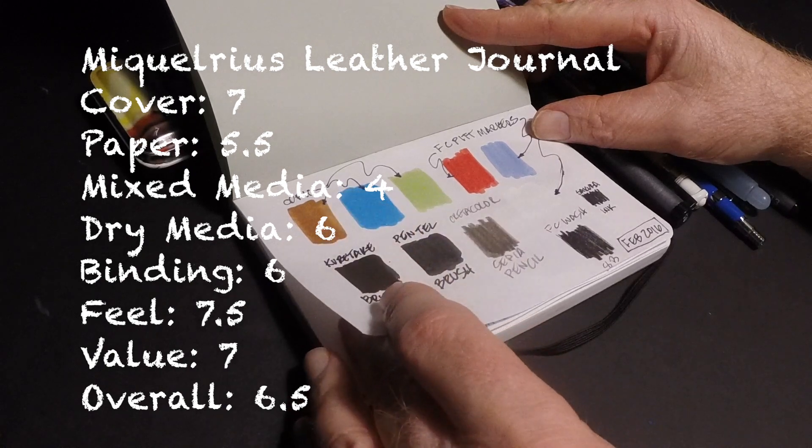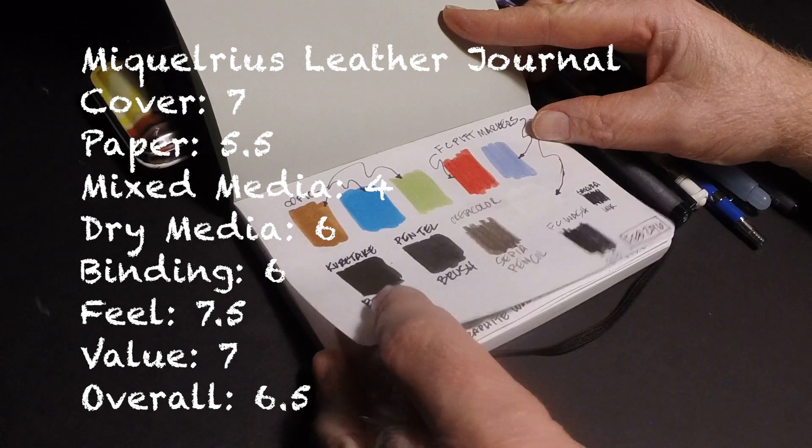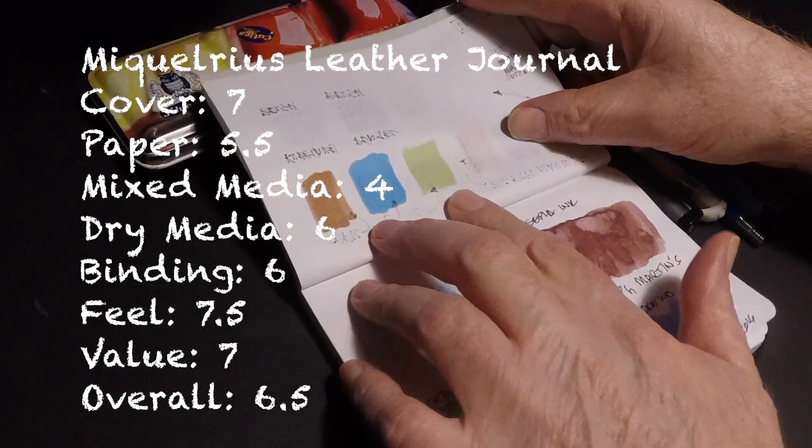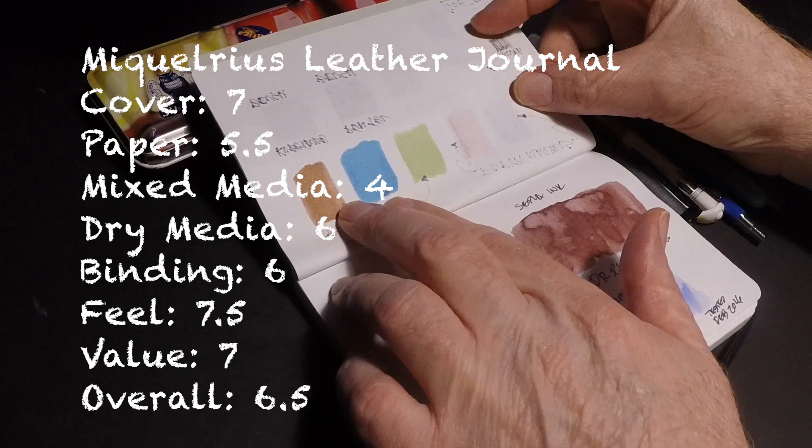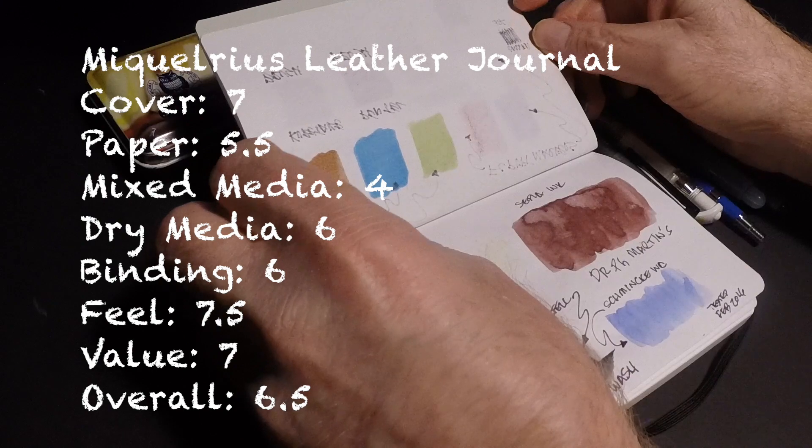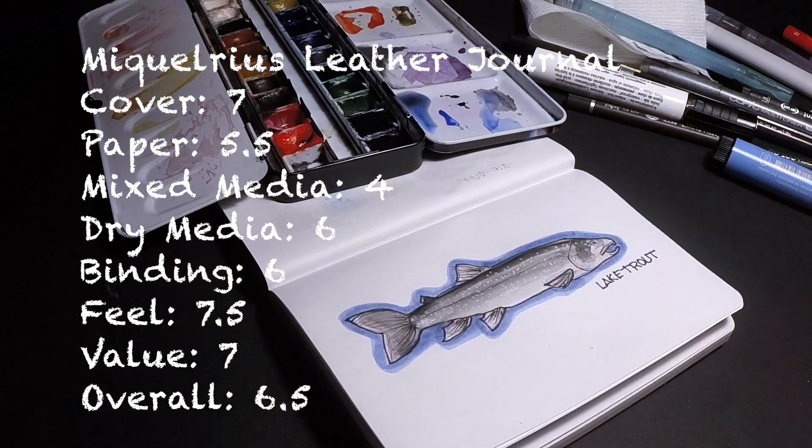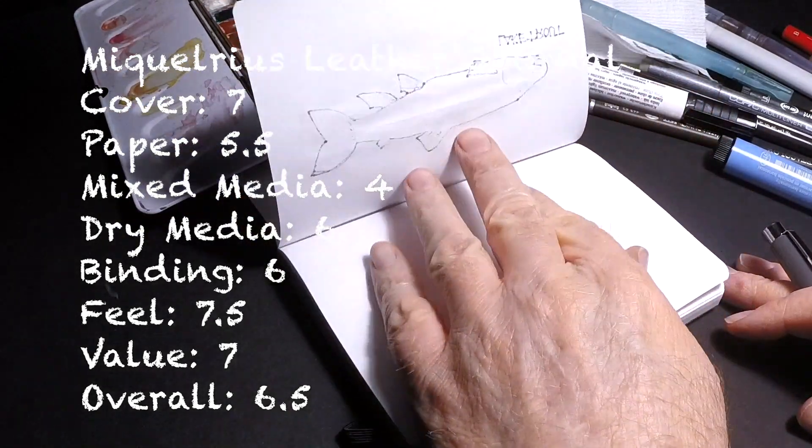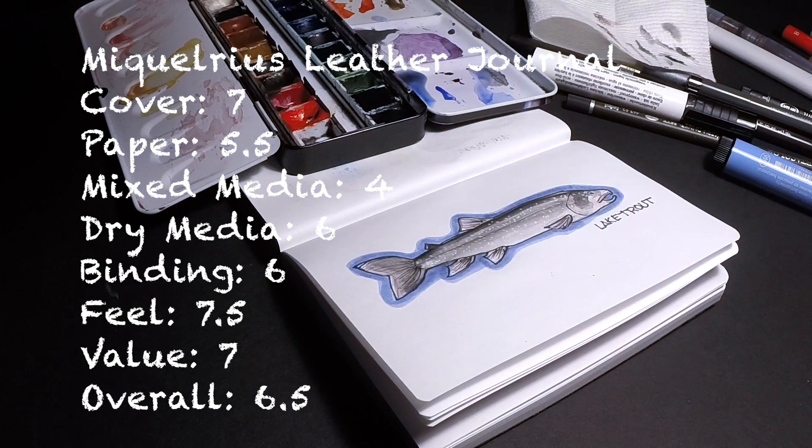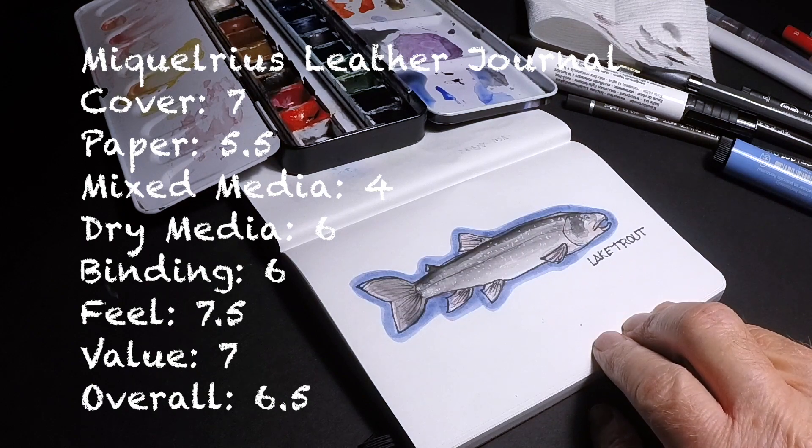So, here's the ratings overall on a scale of 1 to 10. 1 being really the poorest ever, 10 being the greatest. I love the cover. It was good. I gave it a 7. The paper is just a little bit above average. It's opaque. But for me, I like a heavier paper. So, that just comes down to personal preference. Mixed media, about a 4. Not great for mixed media. For dry media, I think it does fine. It's just the paper is a little thin for me. The binding is sturdy, but it's not individually stitched. So, that's another drawback on my side. It's really got a nice feel to it. I think mostly because of the leather. Overall value, when you consider that it's leather, it's a good value. Overall, I give it a 6.5. It's a decent sketchbook, and if you like the thinner type paper, you'll probably really enjoy this sketchbook.